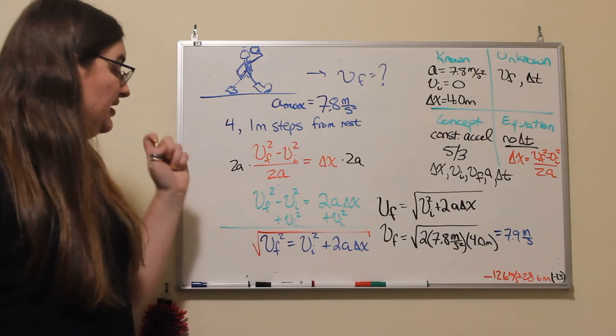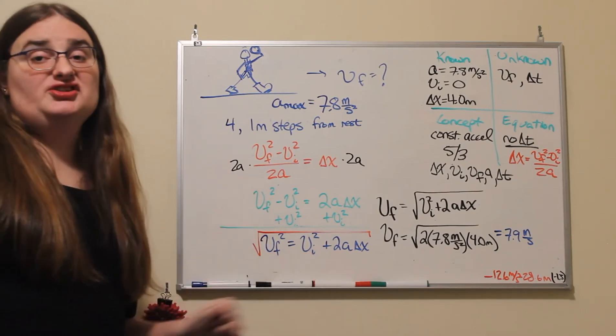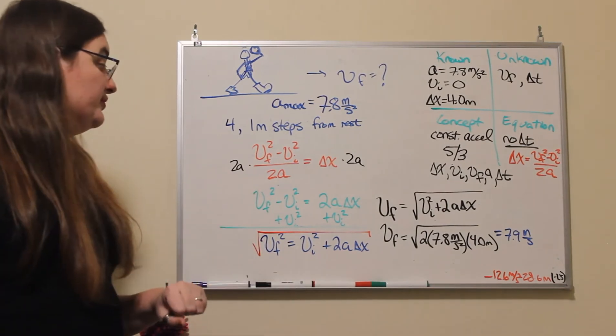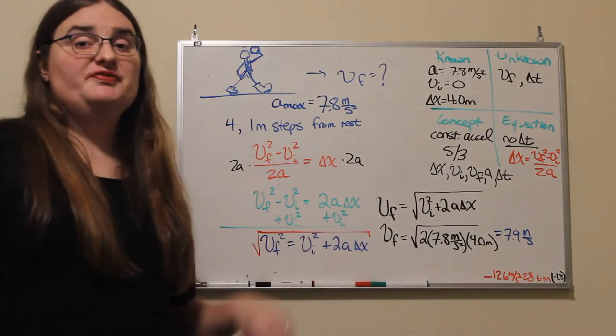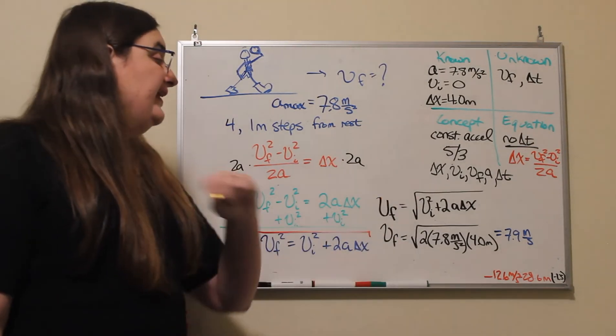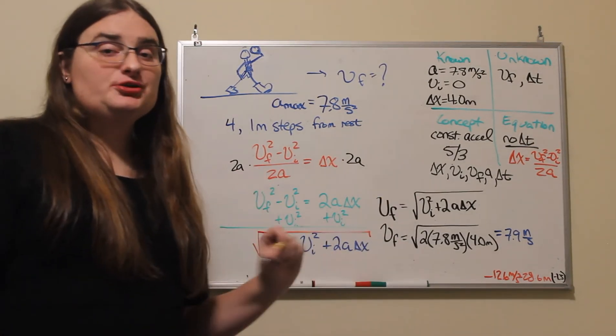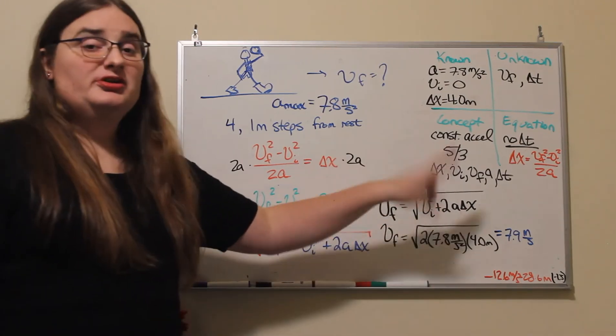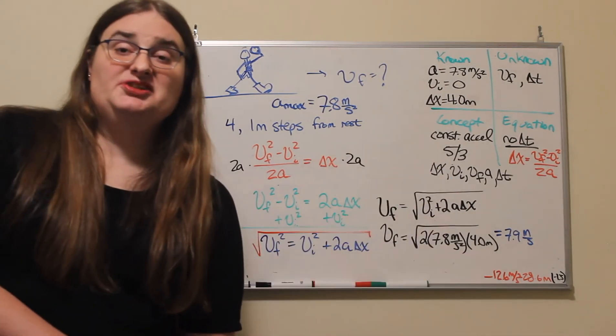And then the last step to undo a square, we take the square root. The square root of v final squared is just v final, and then I have the square root of v initial squared plus 2 times a times my displacement.